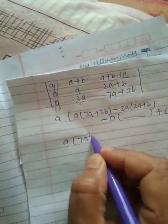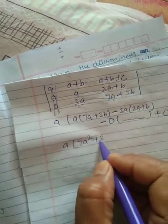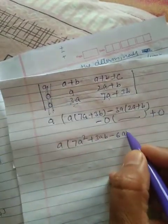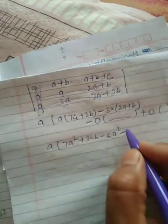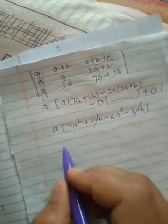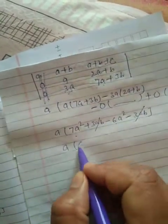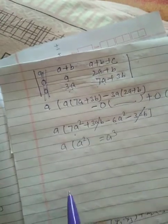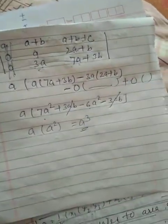So we have: a(7a² + 3ab - 6a² - 3ab). The 3ab terms cancel out. 7a² - 6a² = a². Finally we get a³, which is what we had to prove. That is our proof.